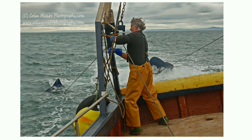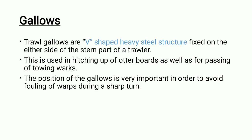Trawl gallows are V-shaped heavy steel structures fixed on either side of the stern part of the trawler. They are used for hitching up the otter boards as well as passing of the towing warps. The position of the gallows is very important in order to avoid falling of the warp during a sharp turn.